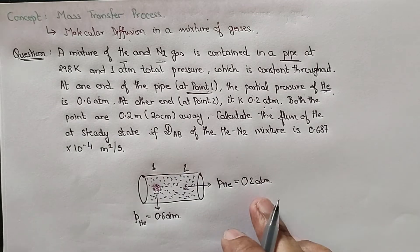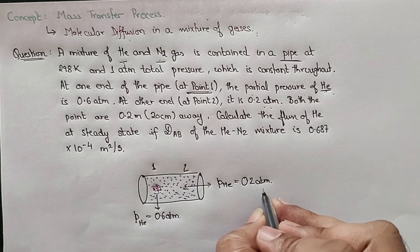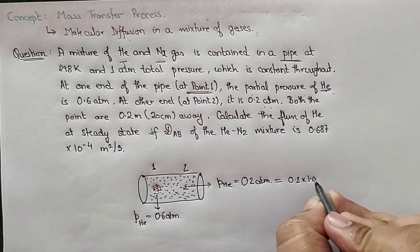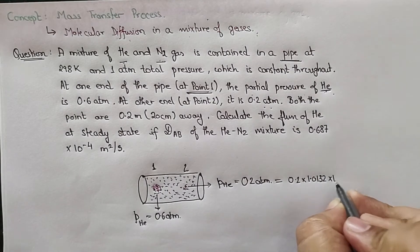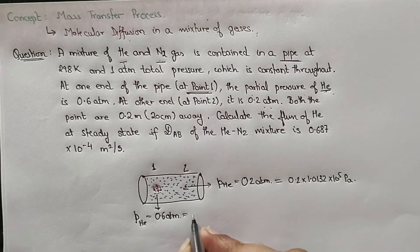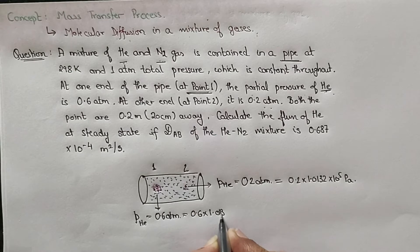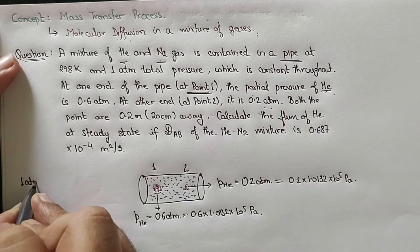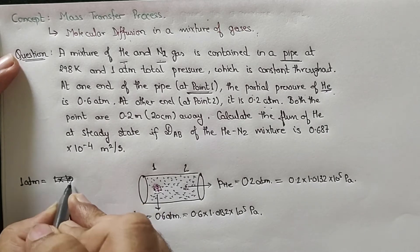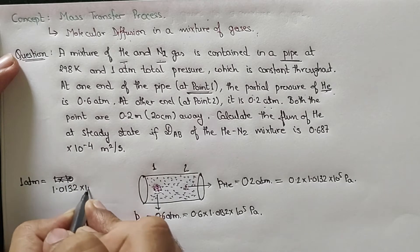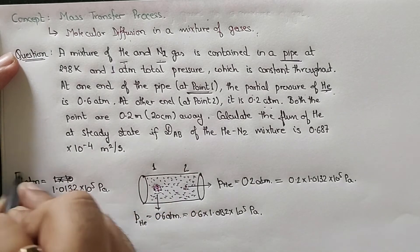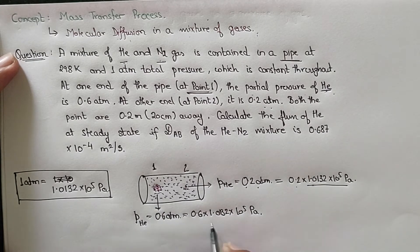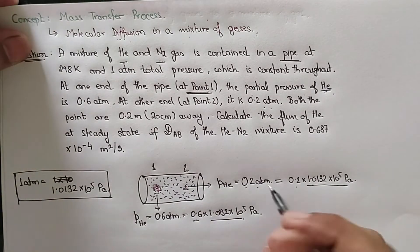The first thing you should always do is convert atm into pascals. So 0.2 atm converts to 0.2 × 1.0132 × 10⁵ pascals, and 0.6 atm converts to 0.6 × 1.0132 × 10⁵ pascals. Remember that 1 atm equals 1.0132 × 10⁵ pascals.